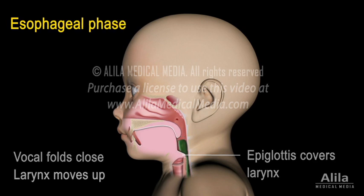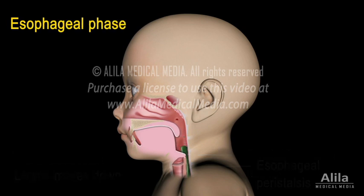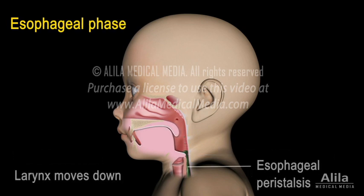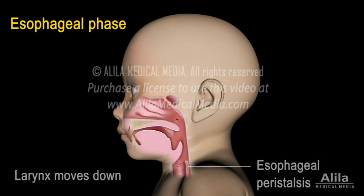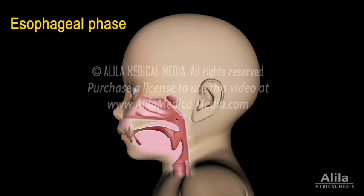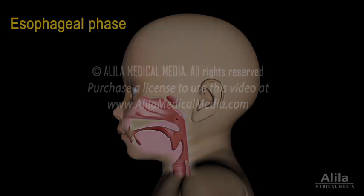In the esophageal phase, the food bolus is propelled down the esophagus by peristalsis, a wave of muscular contraction that pushes the bolus ahead of it. The larynx then moves back down to its original position.